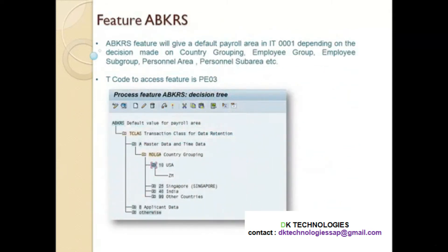Now let us see what is the feature ABKRS. The ABKRS feature is used to default the payroll area in infotype 1. We know infotype 1 has a field called payroll area. The purpose of this feature is to default the payroll area in that infotype depending upon the decision tree. Whenever I talk about a feature, it is basically talking about a decision tree. You can place whatever decision you want — for example, tell the system: if the employee belongs to country 10, then this should be the payroll area. The system takes this value from the feature and stores it as a default value in the infotype, reducing the effort of the end user.